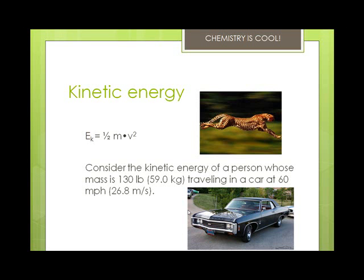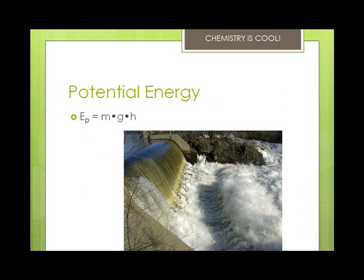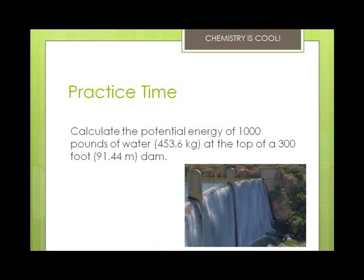Let's look at the next one. Potential energy is the energy that depends on the position, such as height, in a field of force — for example, like gravity. The water of a given mass m at the top of a dam is at a relatively high position h in the gravitational field g. Let's calculate the potential energy of this water.